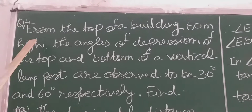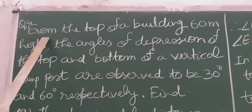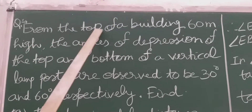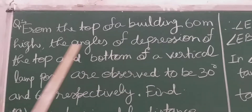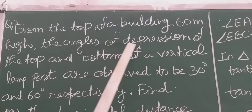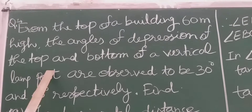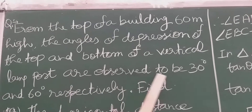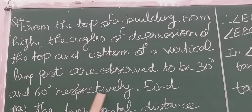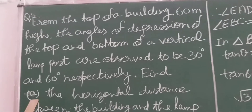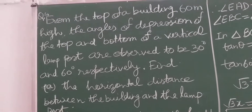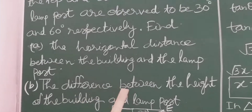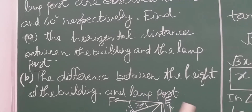Hello students, let us solve more questions of height and distance. This is question number one: From the top of a building 60 meter high, the angles of depression of the top and bottom of a vertical lamppost are observed to be 30 degree and 60 degree respectively. Find first, the horizontal distance between the building and the lamppost, and second, the difference between the height of the building and the lamppost.